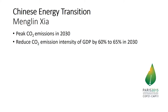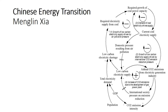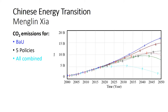The next presentation is Mingling Xia, who talked about the Chinese energy transition. China's proposal in Paris was to peak emissions in 2030 and reduce CO2 emissions per GDP by 60 to 65%. His model connects total electricity demand — from either coal or sustainable sources — to CO2 emissions. The business-as-usual scenario in blue does not show a peak in 2030. He then introduced policies like a carbon tax and different subsidy schemes, but individually they weren't enough. Only when all policies were combined, shown in the light blue line, was a peak in 2030 achieved.